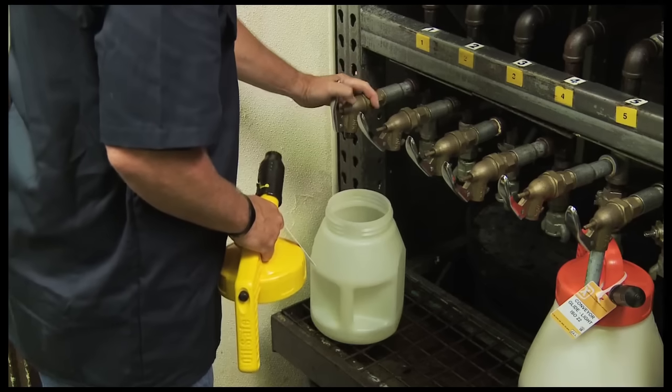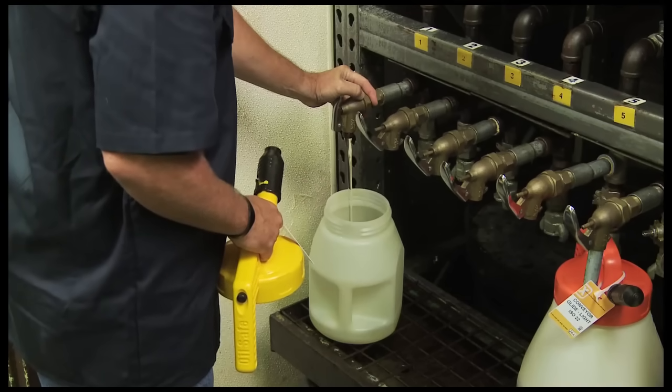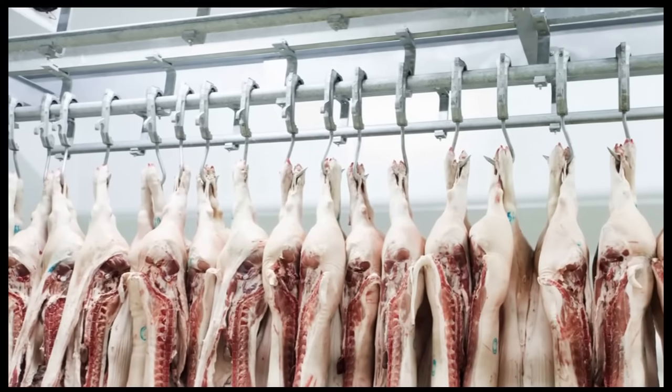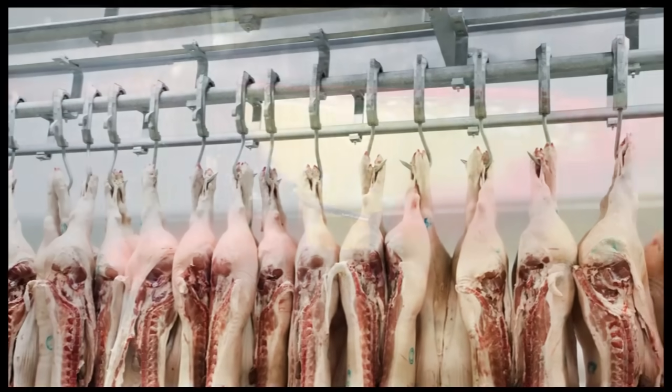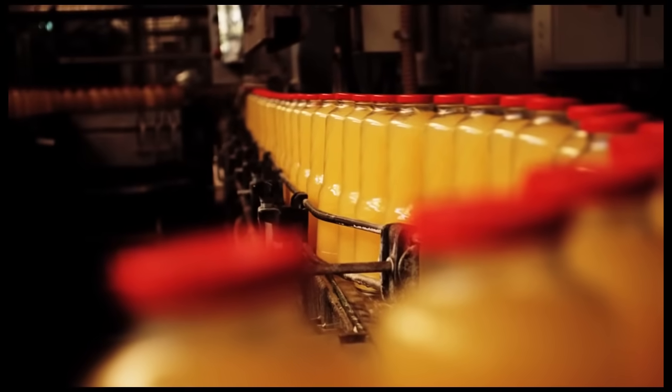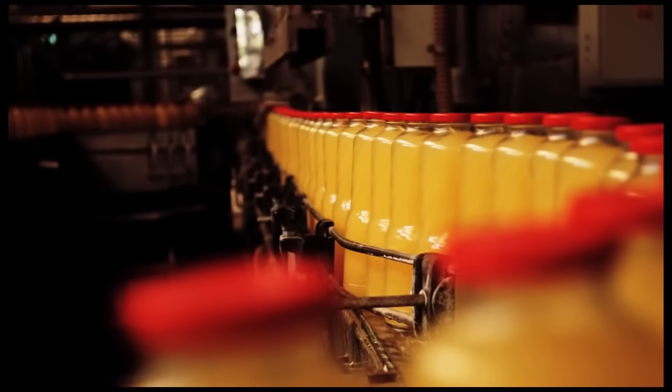It is important to know the pour point of a lubricant. This is the lowest temperature at which the lubricant will flow. This is particularly important if you operate equipment in extreme cold. Once a lubricant reaches its pour point, it won't flow under its own weight.